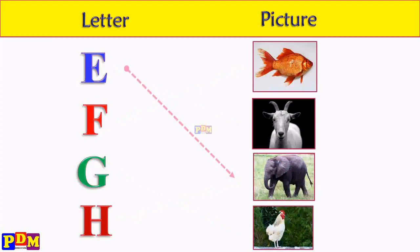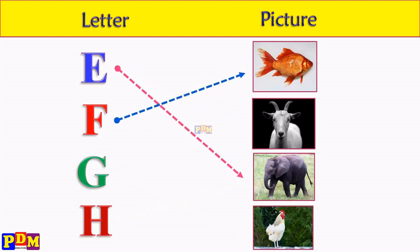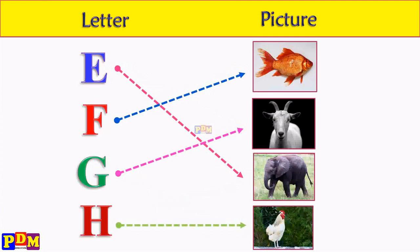E for elephant. F for fish. G for goat. H for hay.